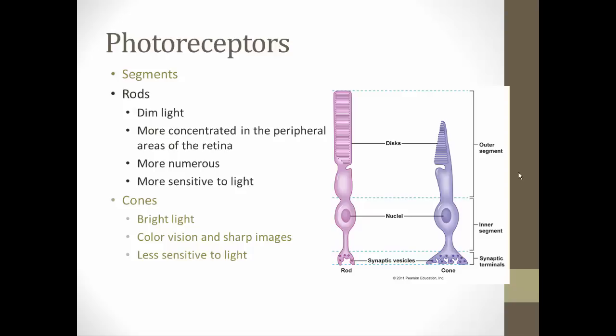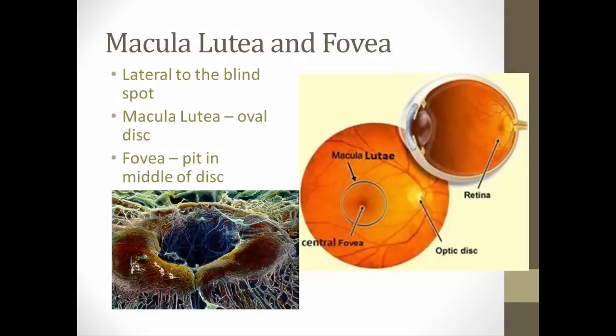Cones can only be used in bright light because they are less sensitive, but they are responsible for color vision. In well-lit conditions you see in color; in darkness there is not enough light for cones to fire, so you see essentially in black and white. Cones are also used for sharp, acute images because of how they connect to bipolar and ganglion cells — something we'll explore more when discussing phototransduction.